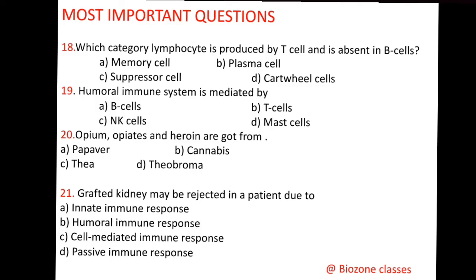Question number 18: Which category of lymphocyte is produced by T cells and is absent in B cells? The four options are: memory cell, plasma cell, suppressor cell, and cartwheel cell. Suppressor cells are only present with T lymphocytes — they are not present in B lymphocytes. These suppressor cells suppress the activity of T killer cells, keeping their activity under control.